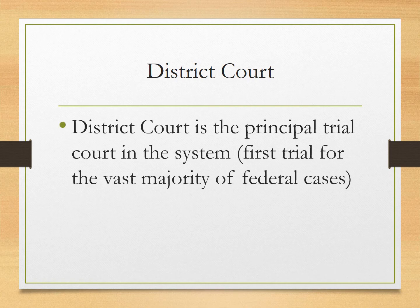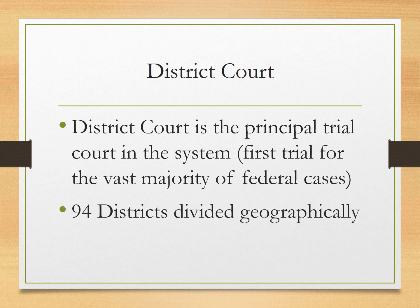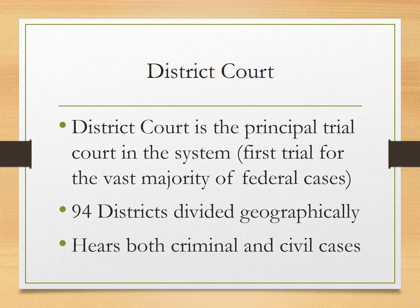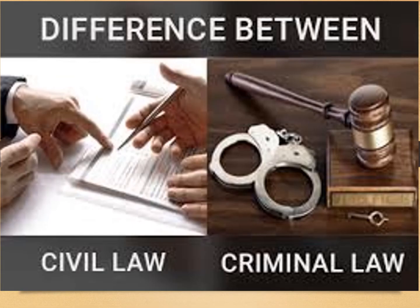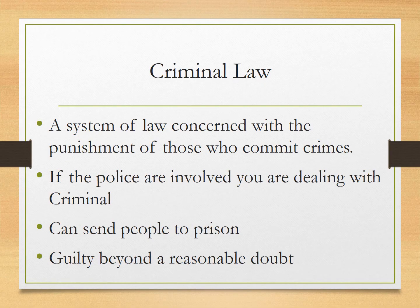The district court is the lowest one, and this is probably where you'd end up if you ever committed a federal crime — hopefully you won't. It's the biggest trial court in the system, and we have these 94 different districts divided geographically, handling both criminal and civil cases. I want to pause and talk about the difference between criminal law and civil law. Civil law has to do with financial and contract disputes — it all has to do about money. Criminal law is where you can actually lose your freedom. If the police are involved, you're dealing with criminal law, which can send people to prison. In a criminal jury trial, you have to be shown to be guilty beyond a reasonable doubt.